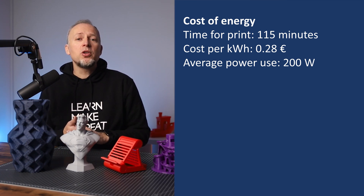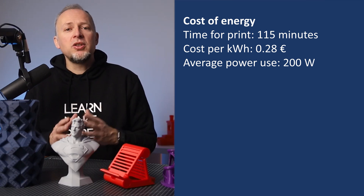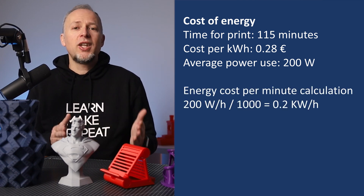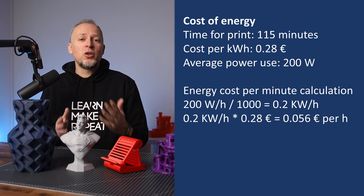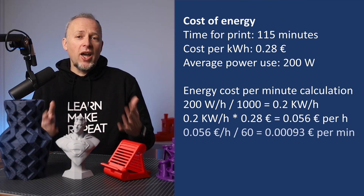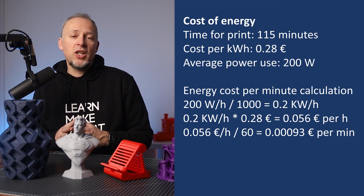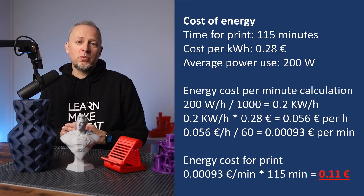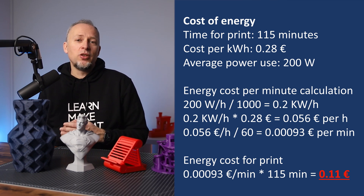I advise you to monitor the overall power consumption over a longer period and build the average. So per hour the printer is using 200 watt hours. Divided by 1000, that is 0.2 kilowatt hours. Multiply this with our energy price of 0.28 euro and we know it costs 0.0560 euro per hour. Divide that by 60 and we know it costs 0.00093 euro per minute. Multiply that by 115 minutes for the print and we get an energy cost of 0.11 euro for this print.